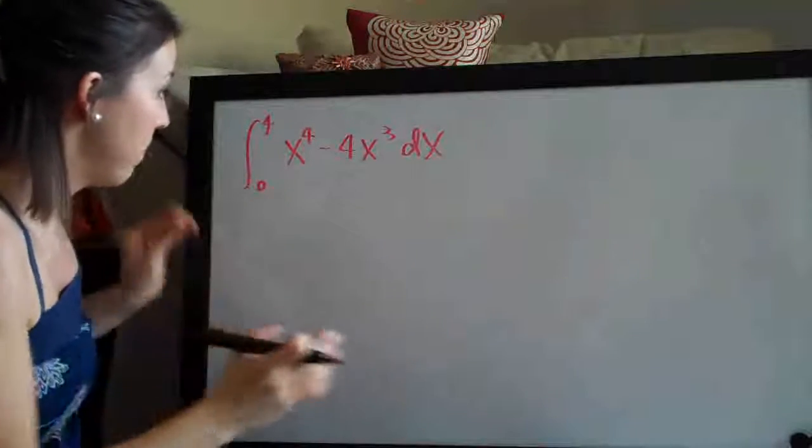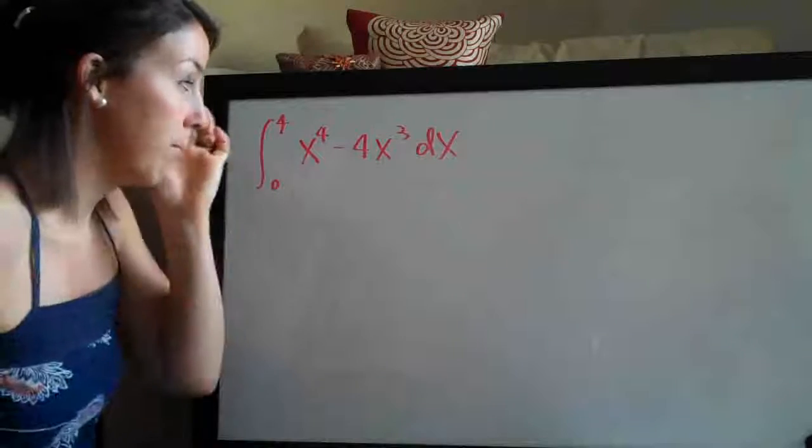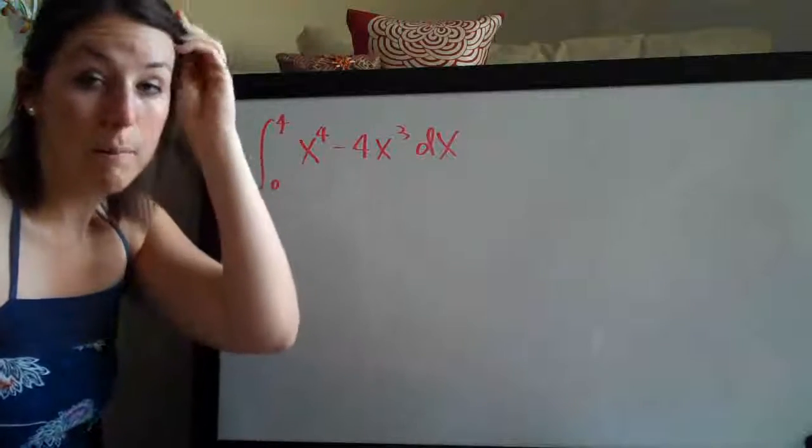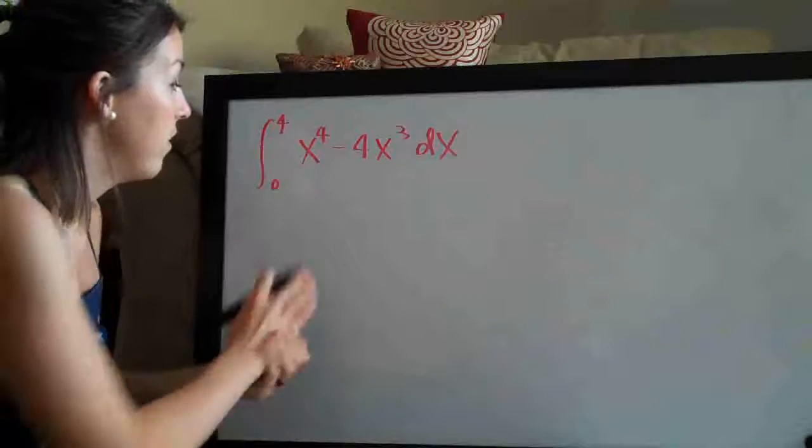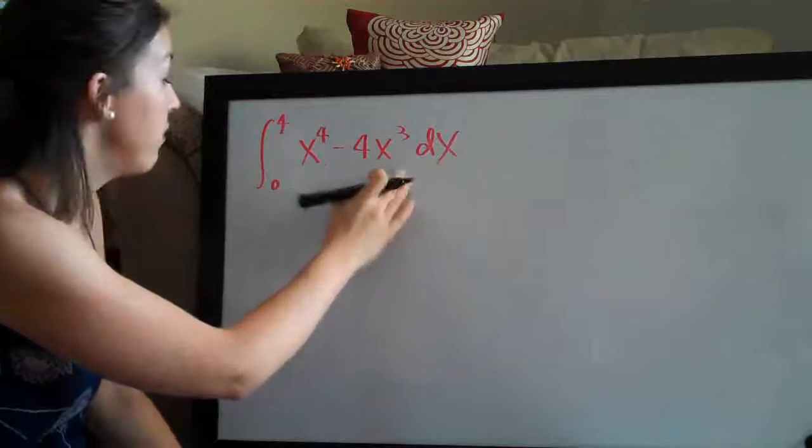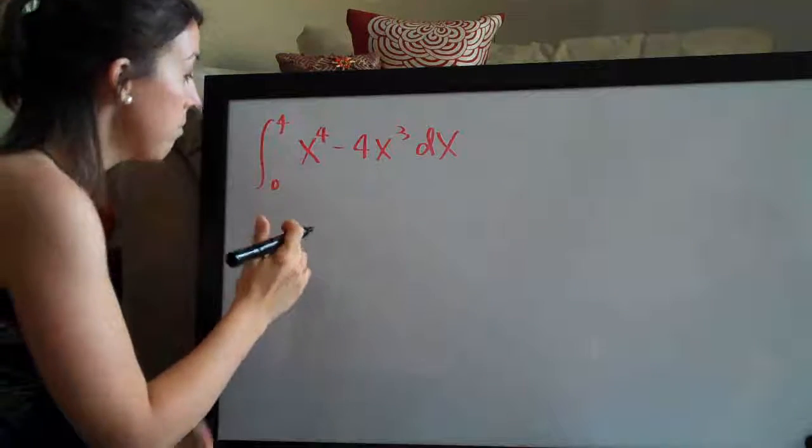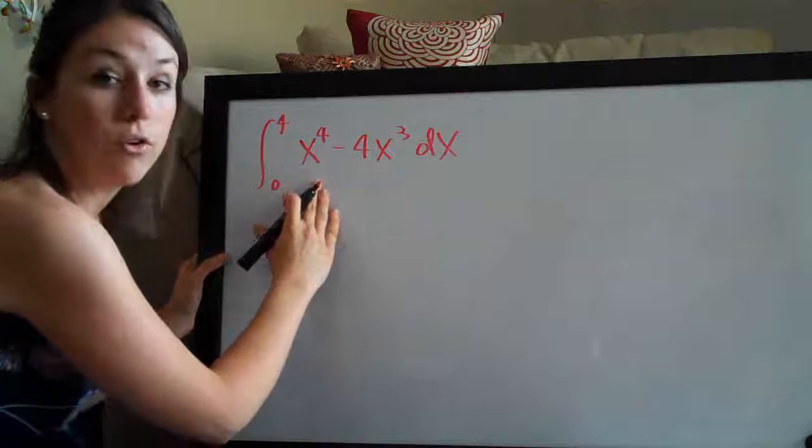So the first thing we want to do with definite integral problems, really simple, basically two steps. The first is to take the integral of the function here. The second is to evaluate on the range zero to four. So like I said, first step, take the integral.